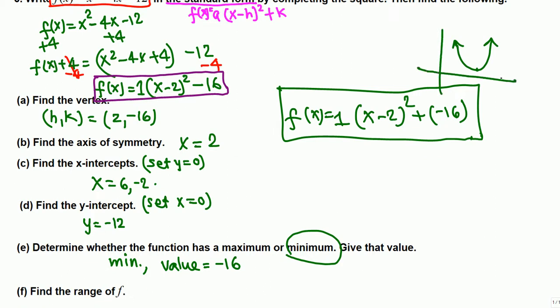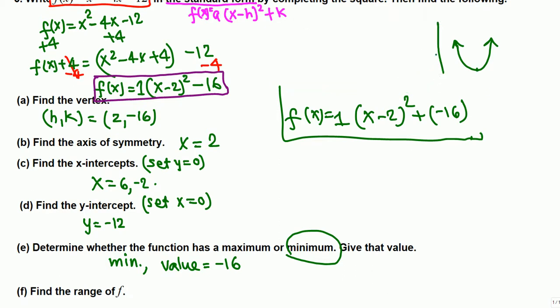Finally, find the range of f. The parabola opens upward and the lowest point it can reach is negative 16 at the vertex. So the range is all values from negative 16 upward — that is, negative 16 and all bigger numbers.